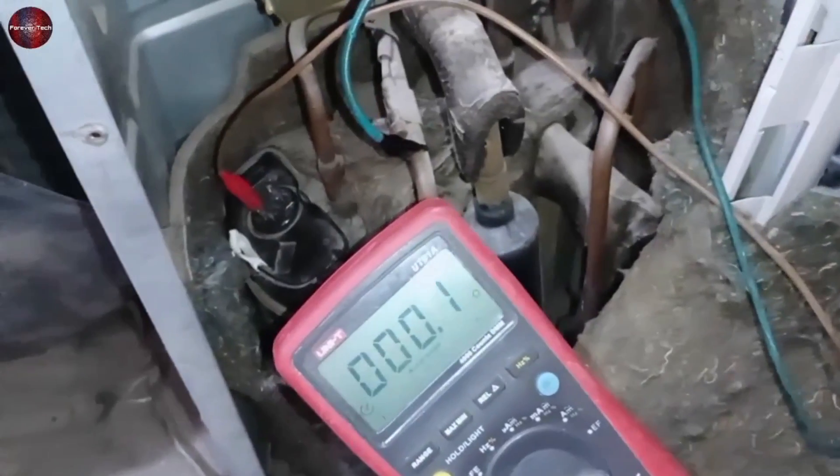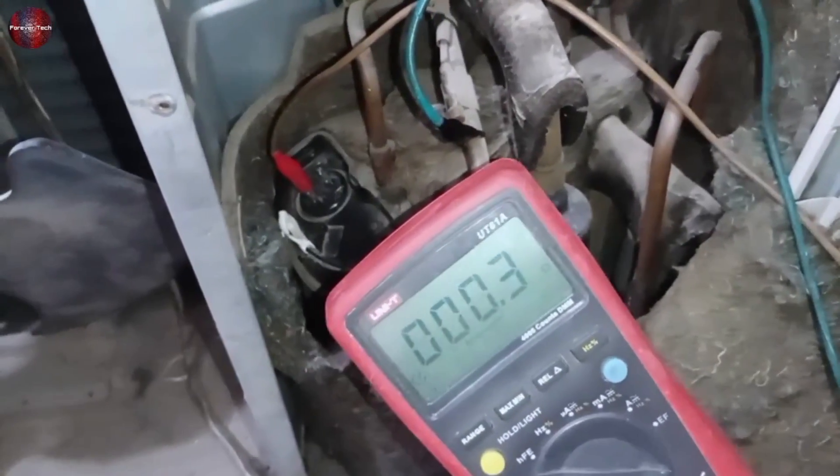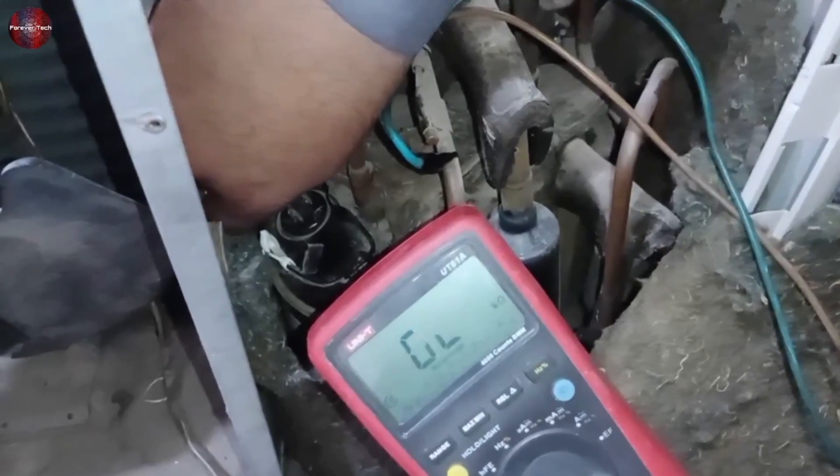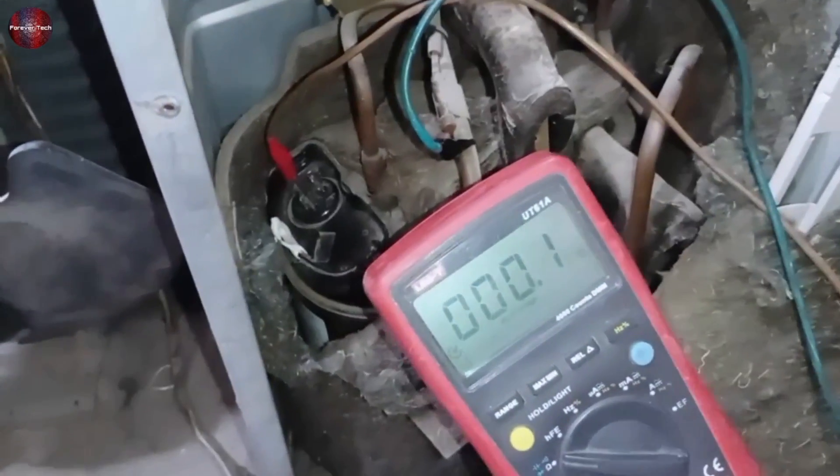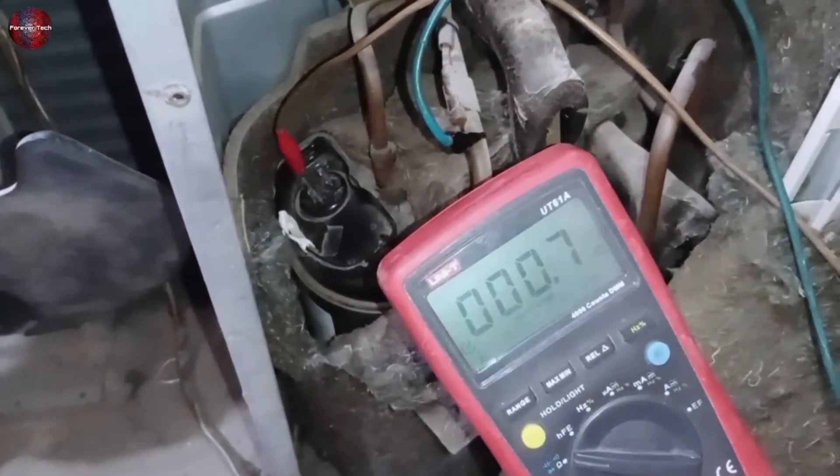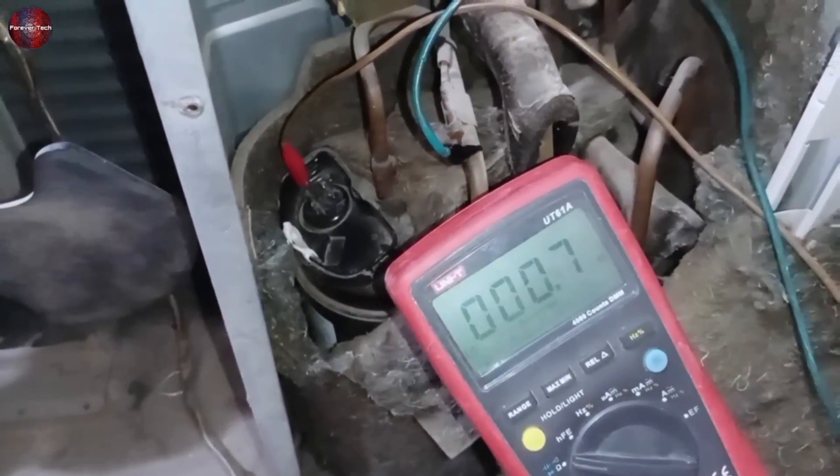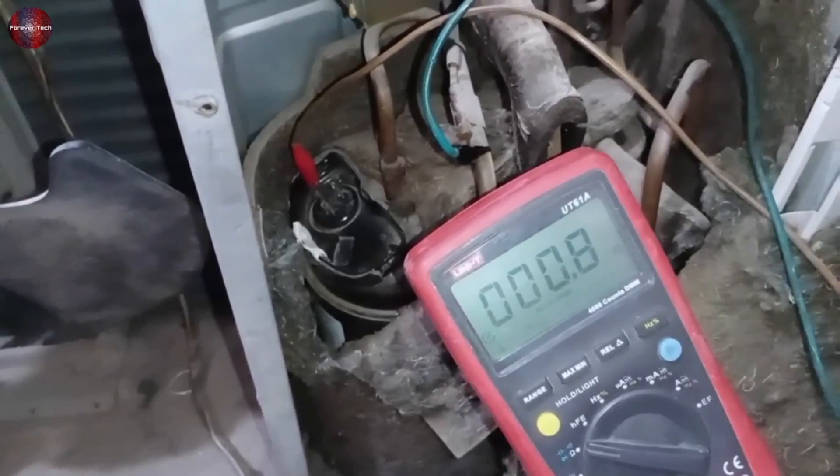Now I will remove the probe from the terminal we checked to the next one. Still, the body short is present. If you check it on one terminal, you will know the short of the compressor, but I will also show you the last terminal. See, it is the same on this one as well.